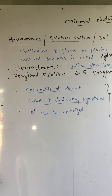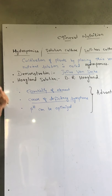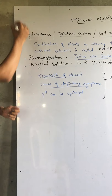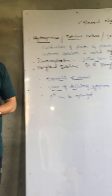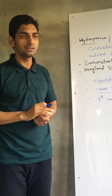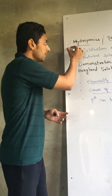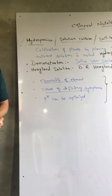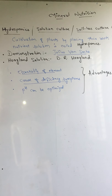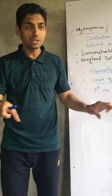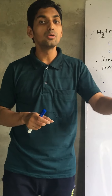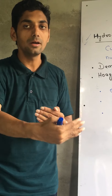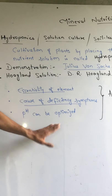If you want to identify or determine the essentiality of a particular element — which element is required by the plant — then you have to use the hydroponics technique. By observing the plant's deficiency symptoms and morphological indicators, you can determine which particular element is required. In the hydroponics technique, we can also optimize the pH of the solution so that the plant can grow under optimal conditions.